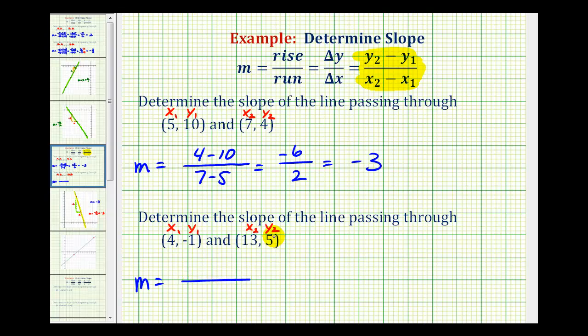Y sub 2 minus y sub 1, that'd be 5 minus negative 1, all over x sub 2 minus x sub 1, that's 13 minus 4. This becomes 5 plus 1, that would be 6, and 13 minus 4 is 9, so we have 6 ninths. But there's a common factor of 3 here, so this simplifies to 2 thirds, which is the slope of the line passing through these two points.